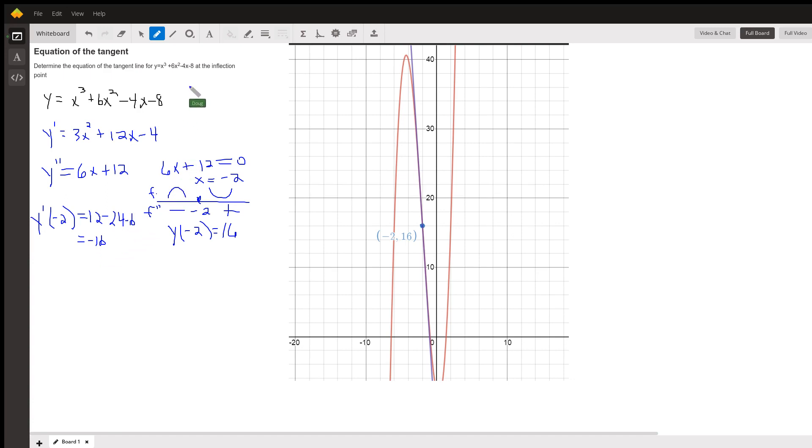So now we know a point and we know the slope. Use point slope. We've got y minus y sub 1, which is 16, equals the slope at that point, negative 16, times the quantity x minus x sub 1. And x minus a negative 2 is x plus 2.